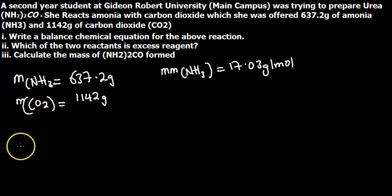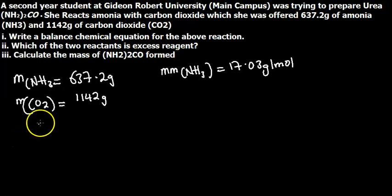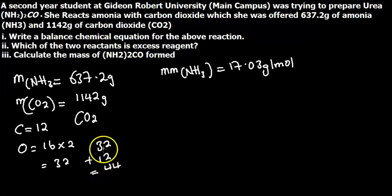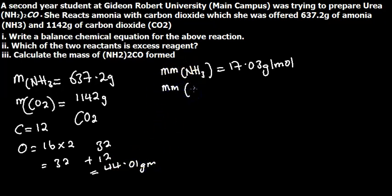For carbon dioxide, we have a combination of two oxygens and one carbon. The atomic mass of carbon is 12 and oxygen is 16. Carbon dioxide has 2 oxygens: 16 multiplied by 2 equals 32. Then 32 plus 12 equals 44. So the molar mass of carbon dioxide is 44.01 grams per mole.